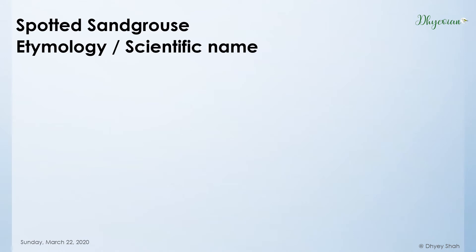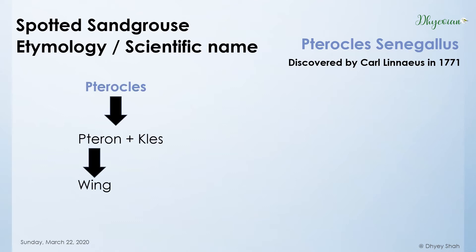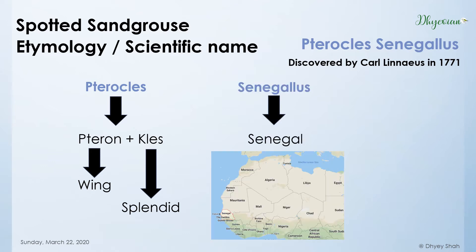Moving on to the scientific name. The scientific name of spotted sand grouse is Pterocles senegalus. It was first described by Carl Linnaeus, a Swedish zoologist, in 1771. 'Pterocles' comes from 'Pteron' plus 'Kles' — 'Pteron' means wing and 'Kles' means splendid — therefore, a bird with splendid wings. 'Senegalus' means discovered in Senegal, which is a country in Western Africa.